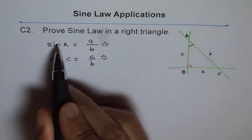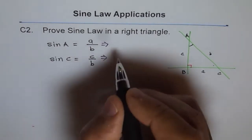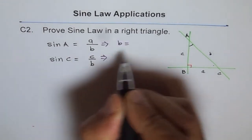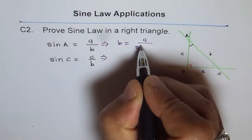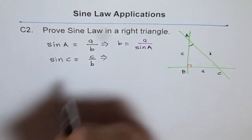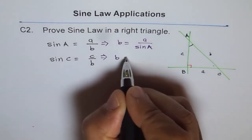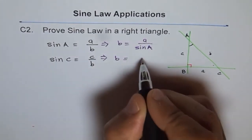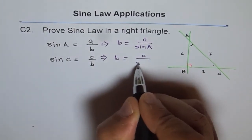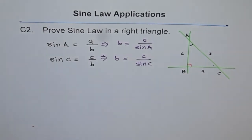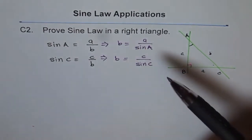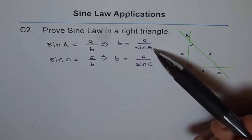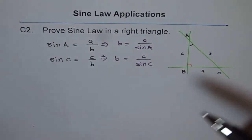From here we say b equals a over sin A. How about this b? This b equals, we'll cross multiply, c over sin C. These two b's are same, right? That means a over sin A equals c over sin C, and that is like sine law.